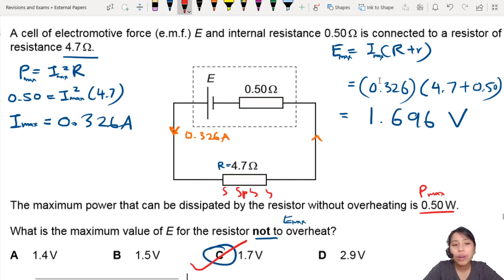That is how you can do this question. Just remember that we are looking at maximum power that will cause a maximum current due to a maximum EMF. That's how it all links together. That is all for this question. I will see you in the next one.